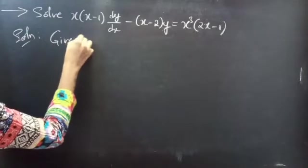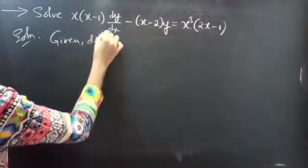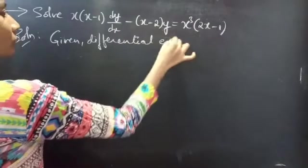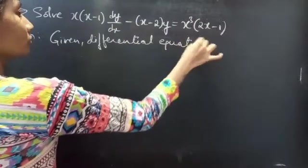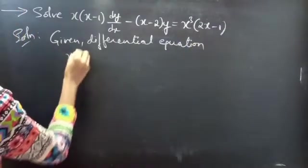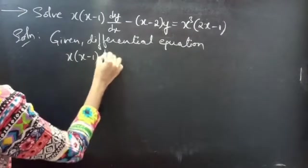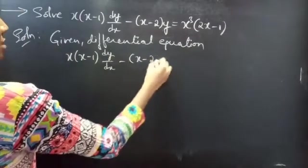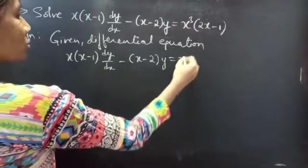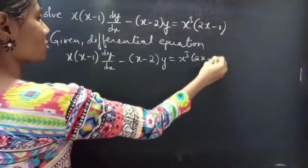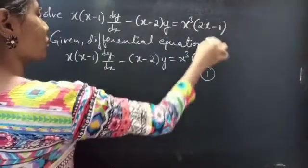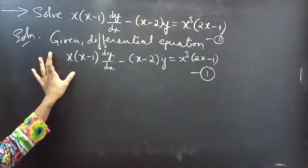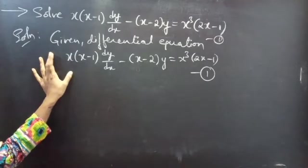Given differential equation: x(x minus 1) dy/dx minus (x minus 2)y equals x cubed times (2x minus 1). Consider the given equation as equation 1. Here we are going to reduce the given equation to linear equation in y form.